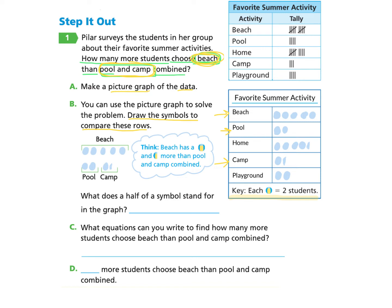Now let's look at the next part of this question: what does half of a symbol stand for in the graph? We go back to the key, which shows the whole beach ball represents two students. So half of the beach ball would represent one student.